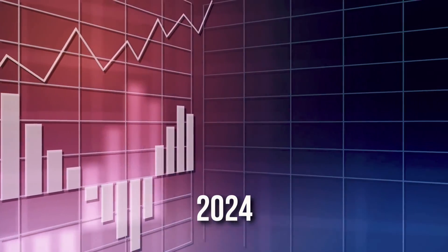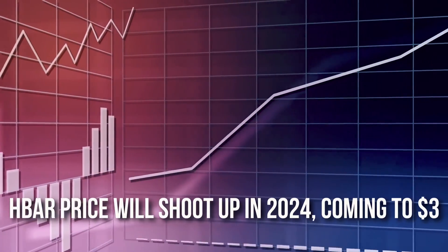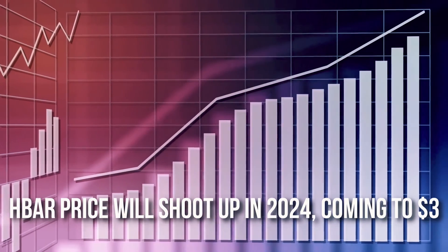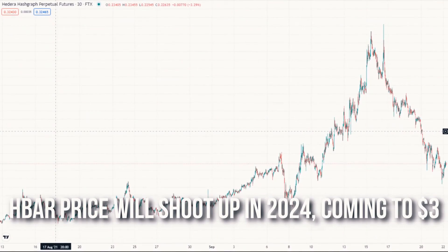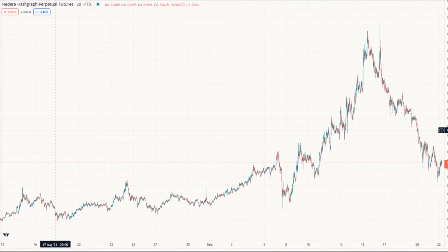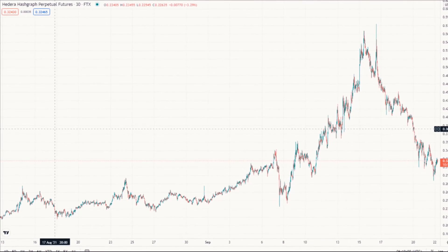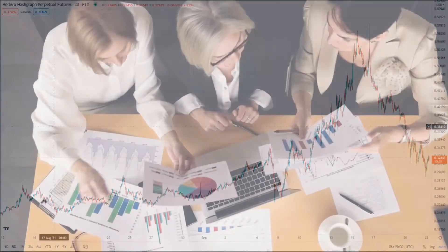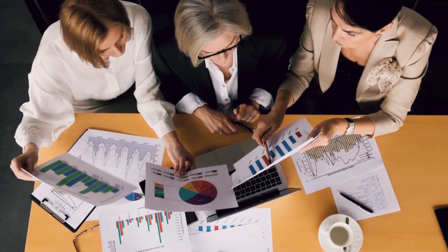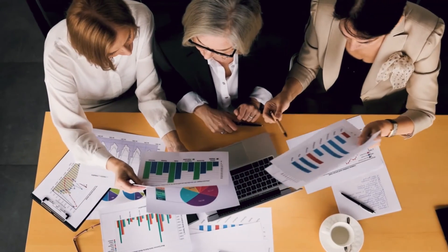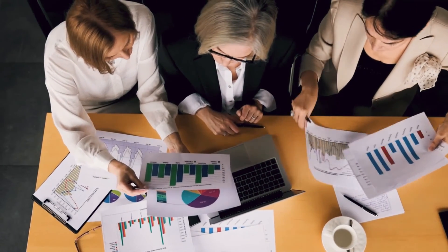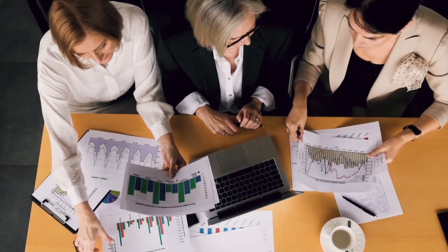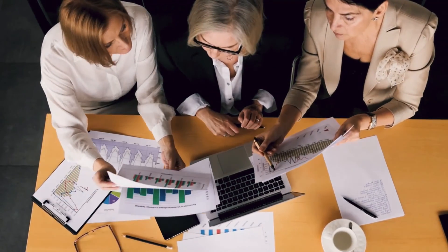2024. Experts are forecasting that HBAR price will shoot up in 2024, reaching $3. Truth be told, there are not very few predictions of Hedera Hashgraph price slamming in 2024. Yet, that could be on the grounds that it's difficult to accurately foresee crypto prices that far later on, and it's simpler to wager on gradual development.